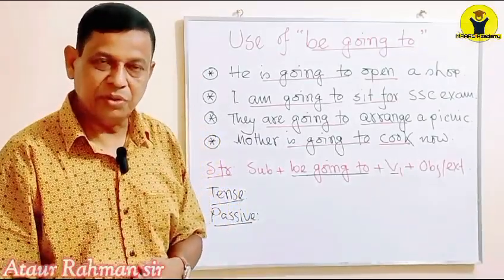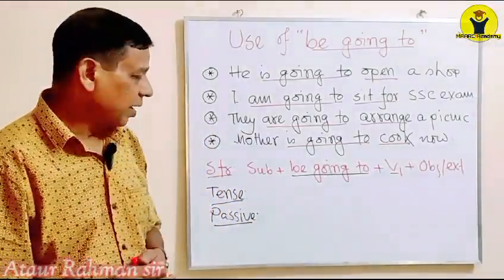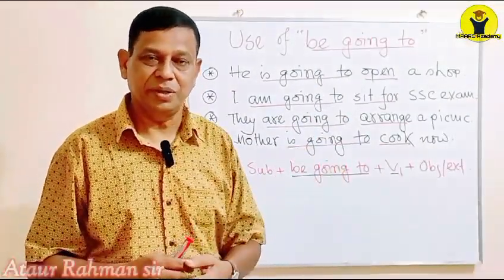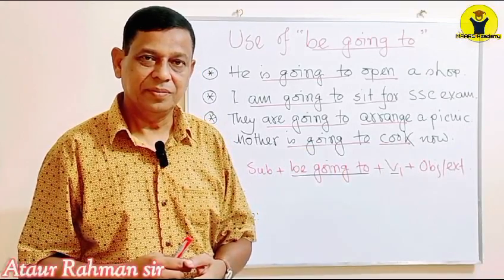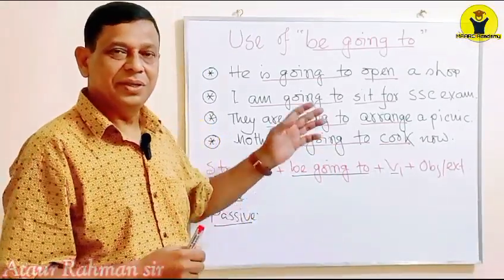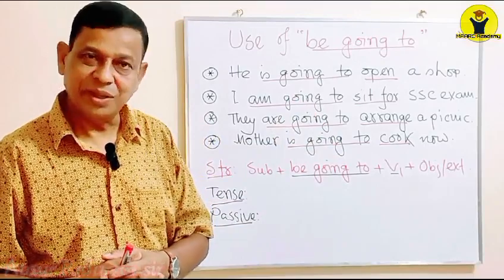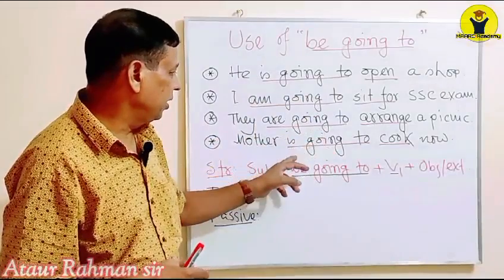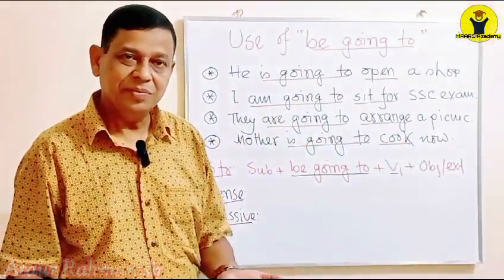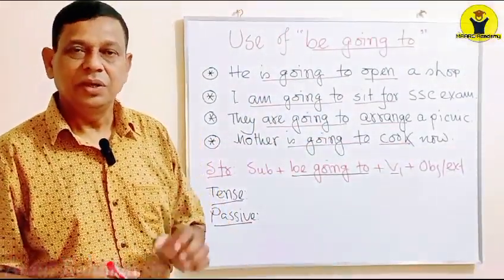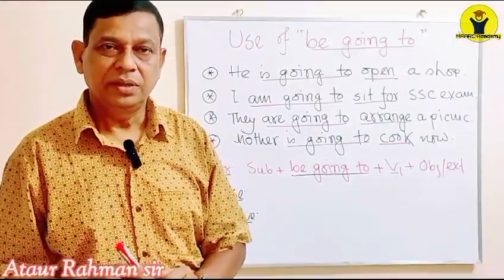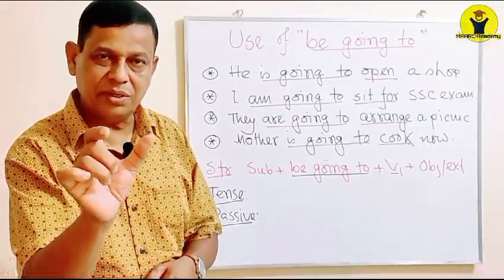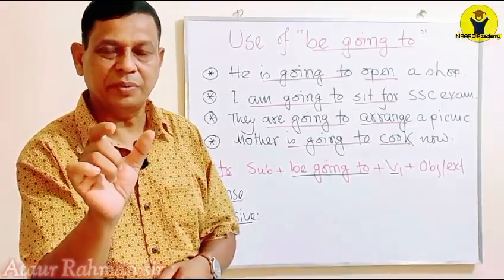I want to tell you what type of tense these sentences are. These might look like continuous tenses — 'is going to', 'is going', 'am going', 'are going', 'is going' — continuous. But these are not continuous tenses. 'Be going to' as a whole — 'am going to', 'is going to', 'are going to' — these three words together are one modal auxiliary.